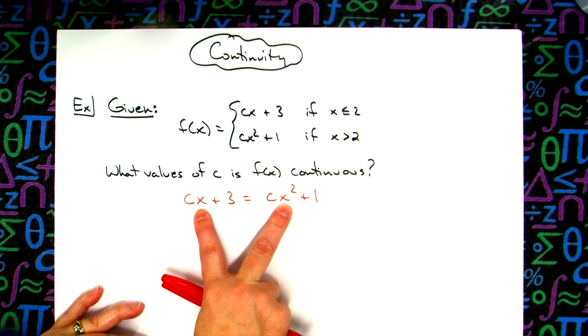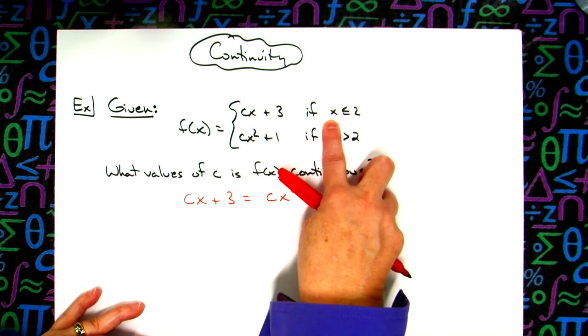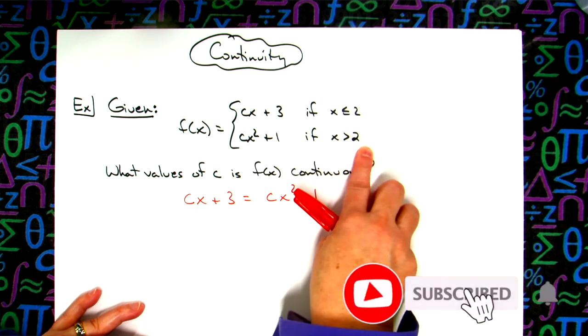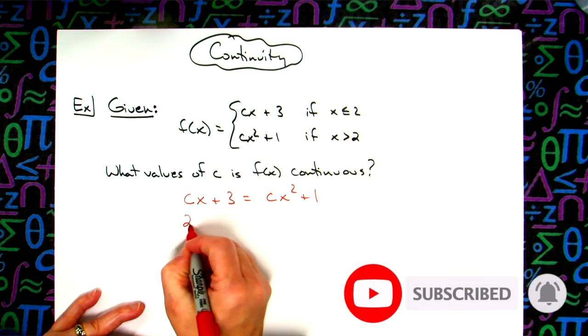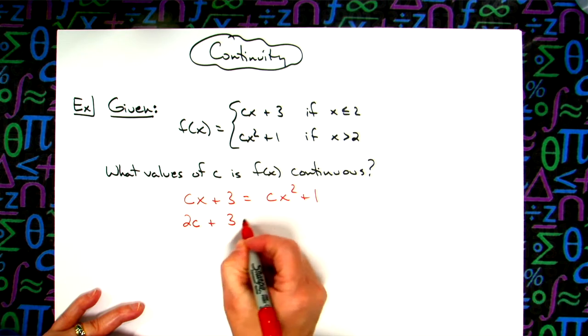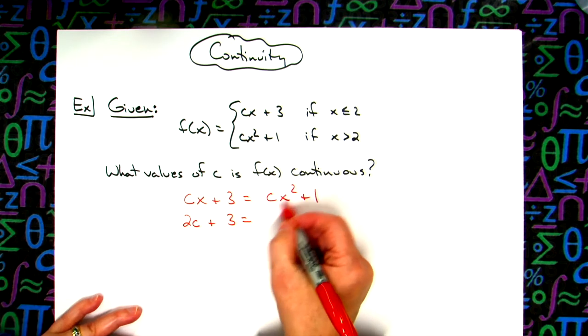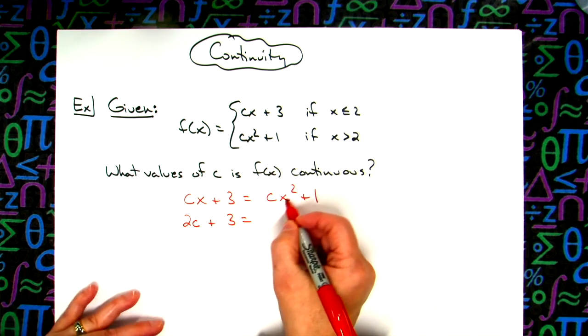This says if x is less than or equal to 2, this is if x is greater than 2. So I'm going to replace x with 2 in both of these. So I'm going to have 2c plus 3 is equal to 2 squared is 4, so then I'll have 4c plus 1.